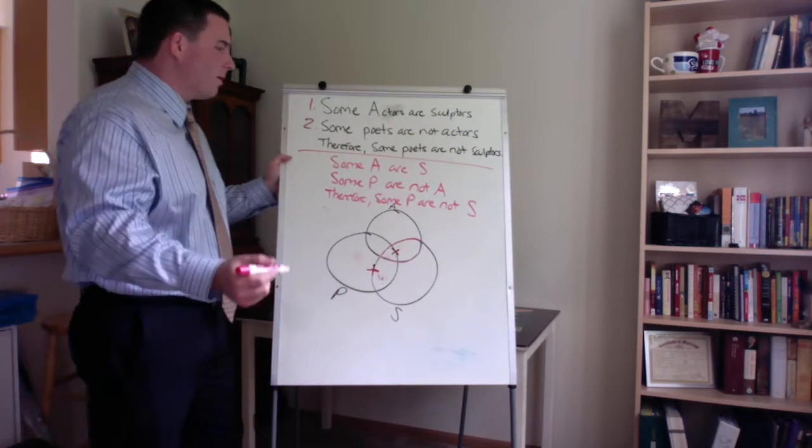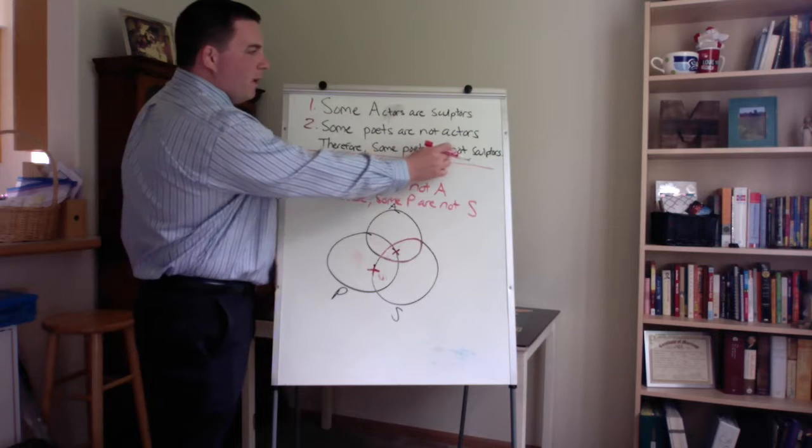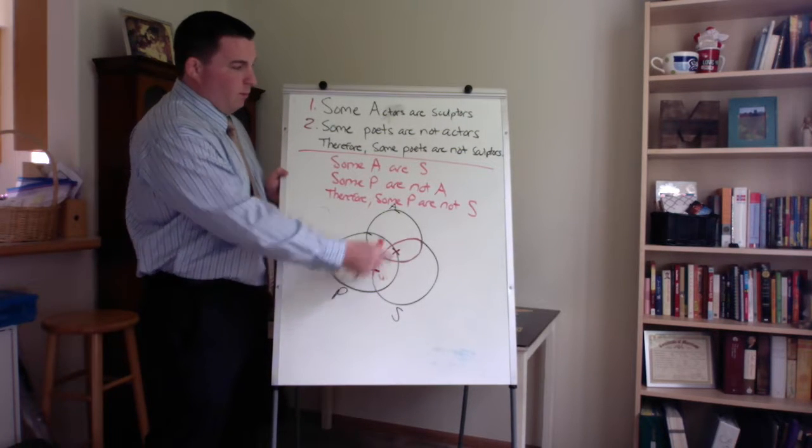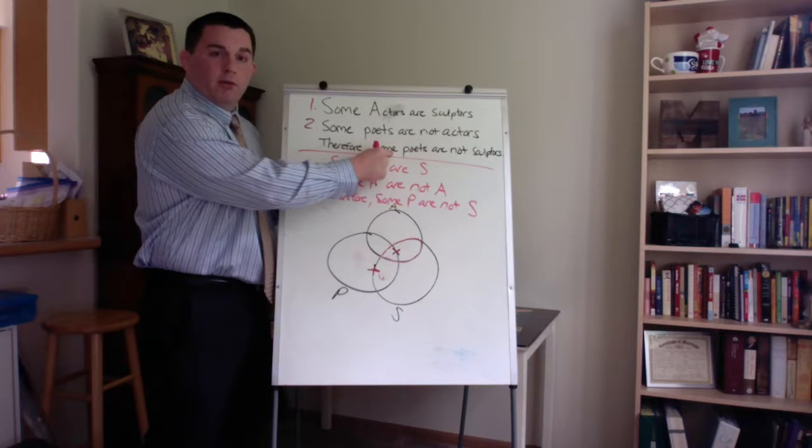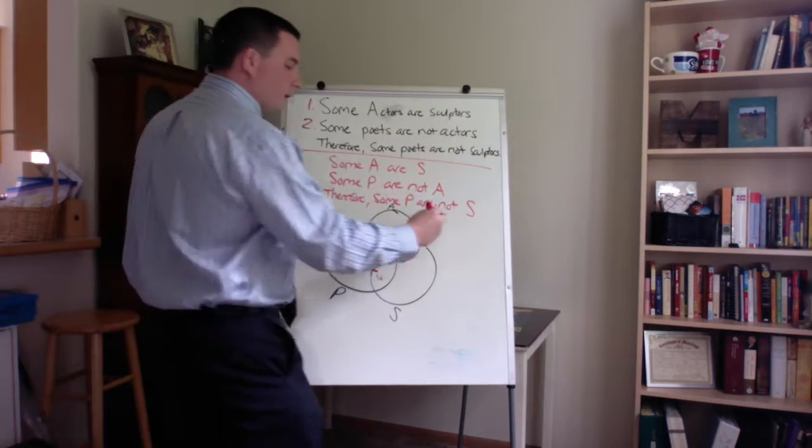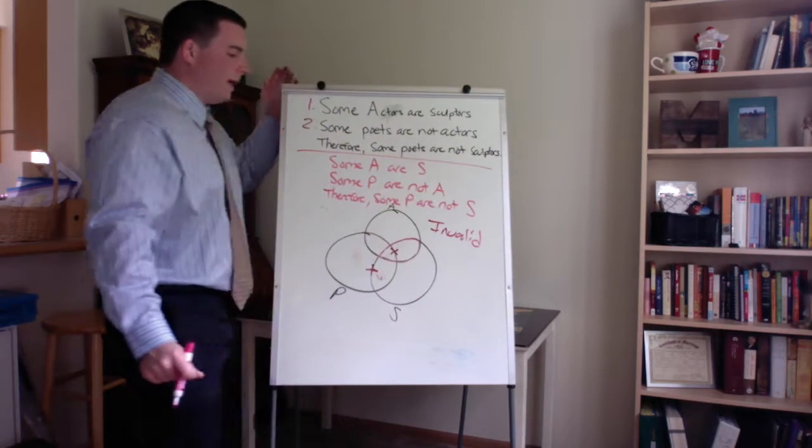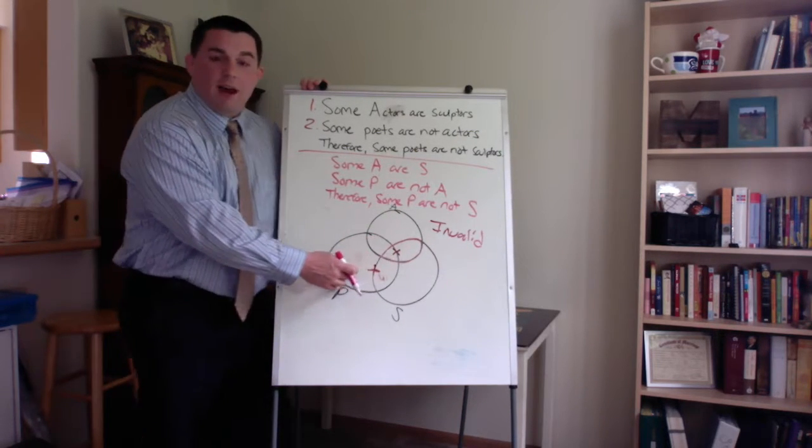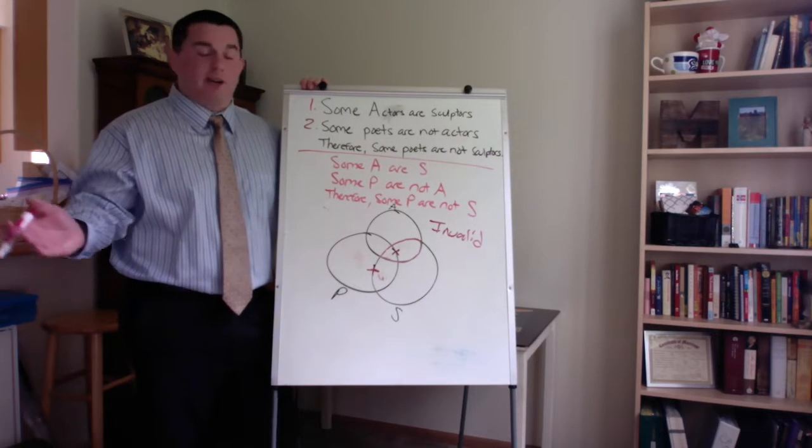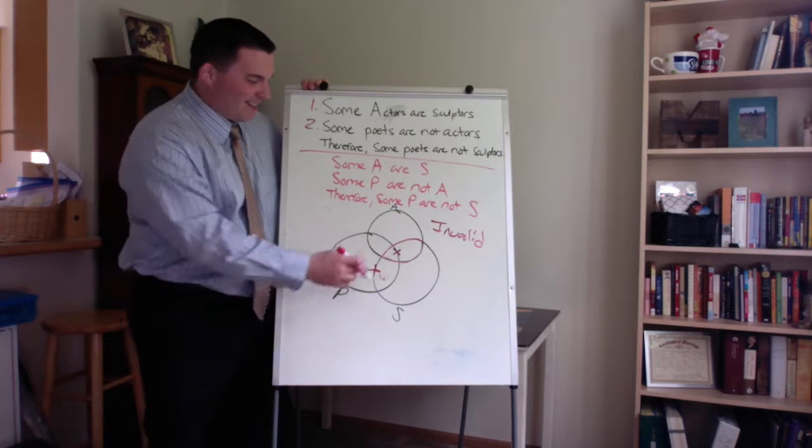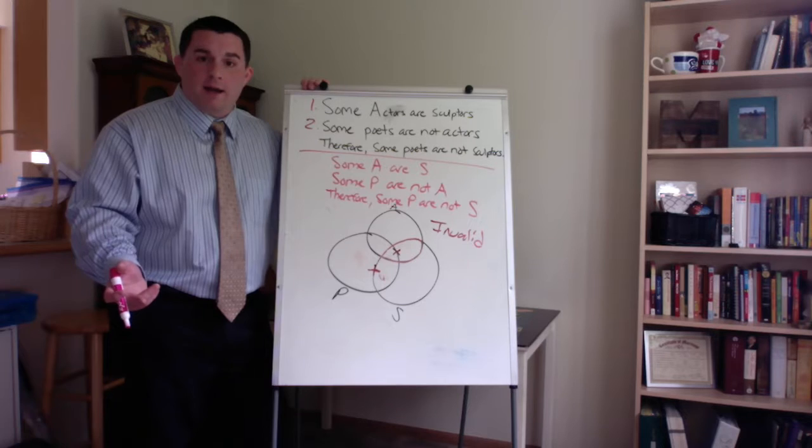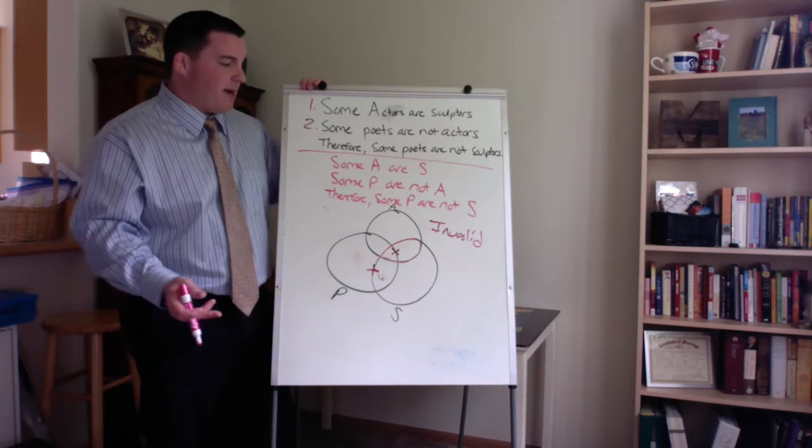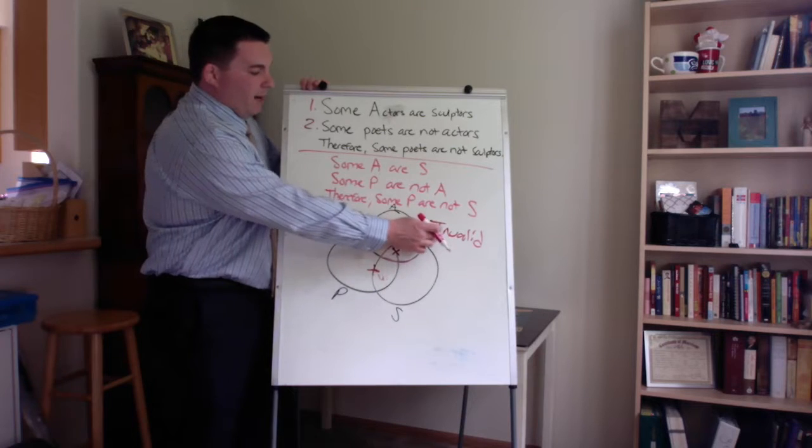So we've got our two premises diagrammed. We look at the conclusion, some poets are not sculptors. Well, we have our X here, it could be there, in which case, our premises would be true, and the conclusion false. So this argument here would be invalid. But I'll just give you a little handy tip here. Whenever you have your two X's on the lines, it's always going to be invalid. So there you go. That's real easy to remember. Whenever you see the X's on the lines, the argument will always be invalid, simply because we don't have enough information to determine whether some P or not S. Could be, might not be, we can't guarantee it, so therefore it would be invalid.